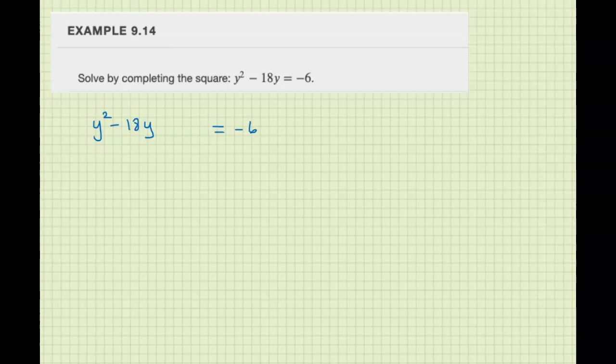Our b is negative 18. We want to divide by 2 and square it, so negative 9 squared is 81. We add 81 to this side and to the other side of the equation to keep things balanced.